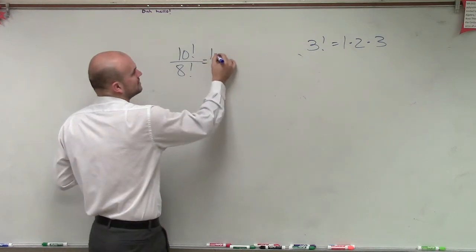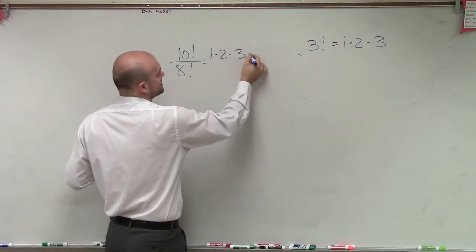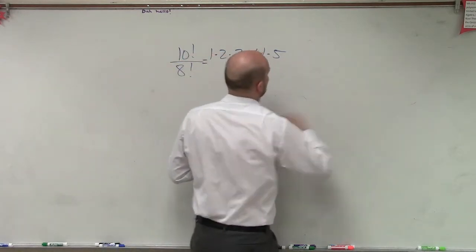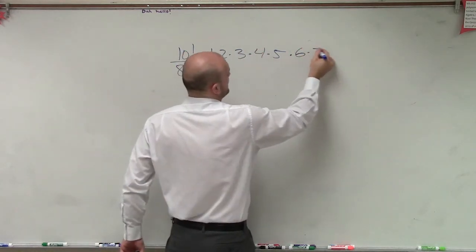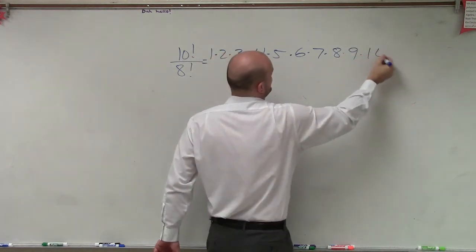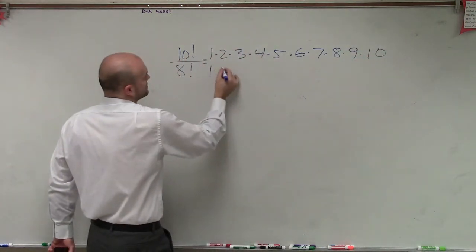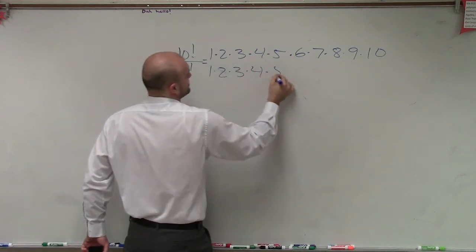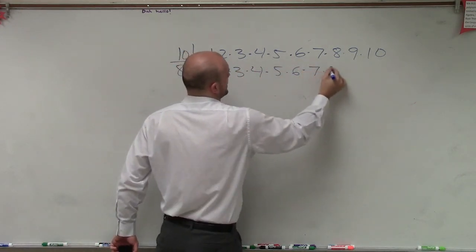So this factorial is going to equal 1 times 2 times 3 times 4 times 5 times 6 times 7 times 8 times 9 times 10, as this one equals 1 times 2 times 3 times 4 times 5 times 6 times 7 times 8.